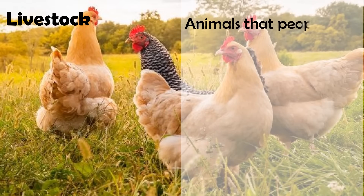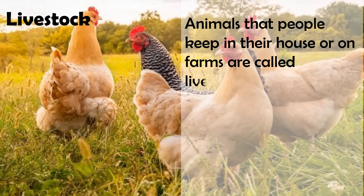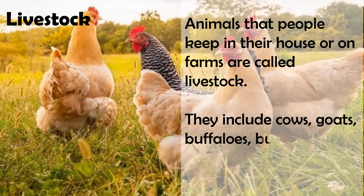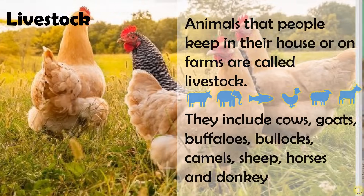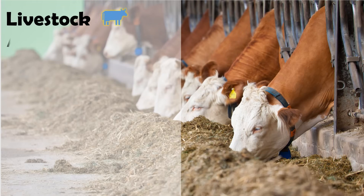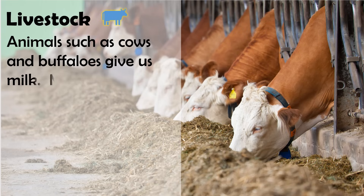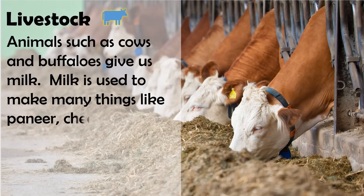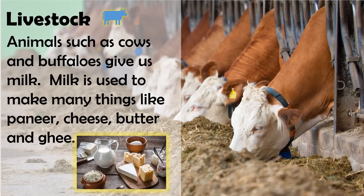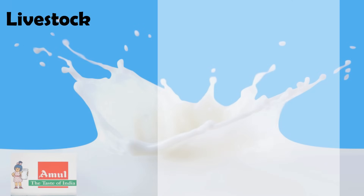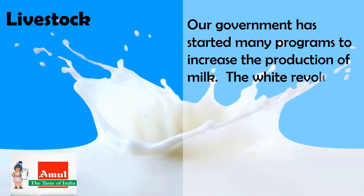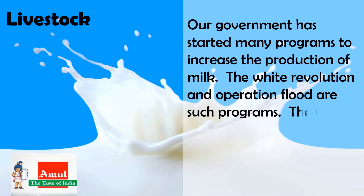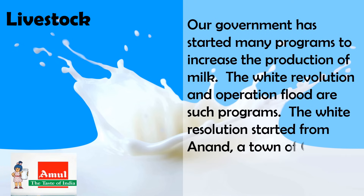Animals that people keep in their homes or on farms are called livestock. They include cows, goats, buffalos, bullocks, camels, sheep, horses, and donkeys. Animals such as cows and buffalos give us milk, which is used to make paneer, cheese, butter, and ghee. The government has started programs like the White Revolution and Operation Flood to increase milk production. The White Revolution started from Anand, a town in Gujarat, under the brand name Amul.